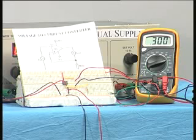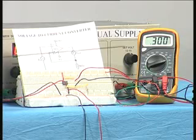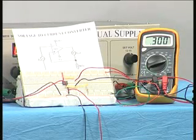So corresponding to every voltage here, the corresponding current is obtained by the feedback network that you have here, and the circuit is converting this voltage into a corresponding current. So this is a voltage to current converter circuit.